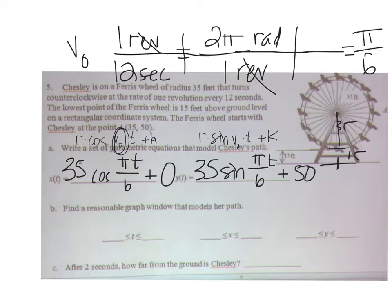So a reasonable graph for the window: it takes 12 seconds to go all the way around, so 0 to 12 is a good t value. The x, from the leftmost point to the rightmost point - let's just do 0 to 70 because there's a diameter of 70.